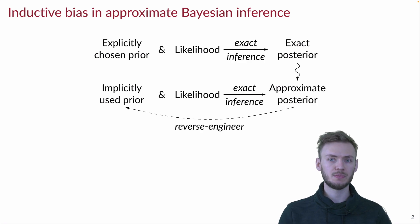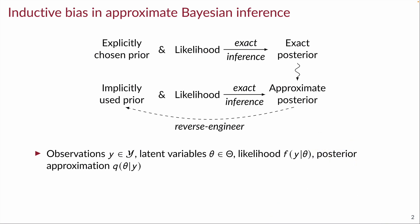To make this a bit more explicit, here's some notation. We call the observations y, the latent variables theta, the likelihood f and the posterior approximations q.